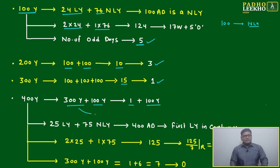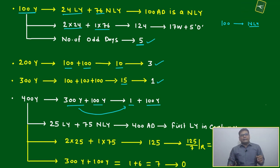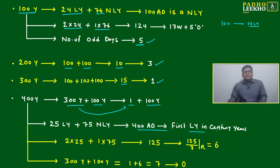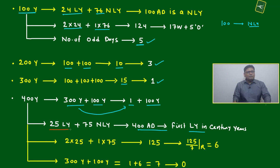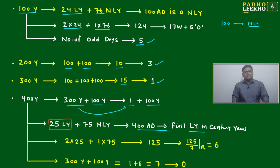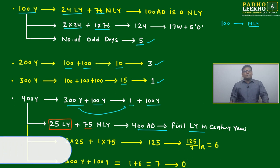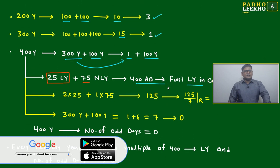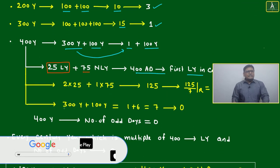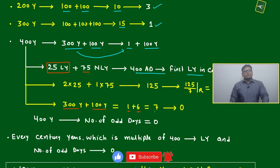For 400 years: 300 years gives 1 odd day. For the last 100 years (301–400 AD), we must recalculate because 400 AD is a leap year, giving 25 leap years and 75 non-leap years in that century block. Calculating: 25 × 2 = 50, plus 75 × 1 = 75; total 125. Dividing 125 by 7 gives remainder 6. So the last 100-year block has 6 odd days.